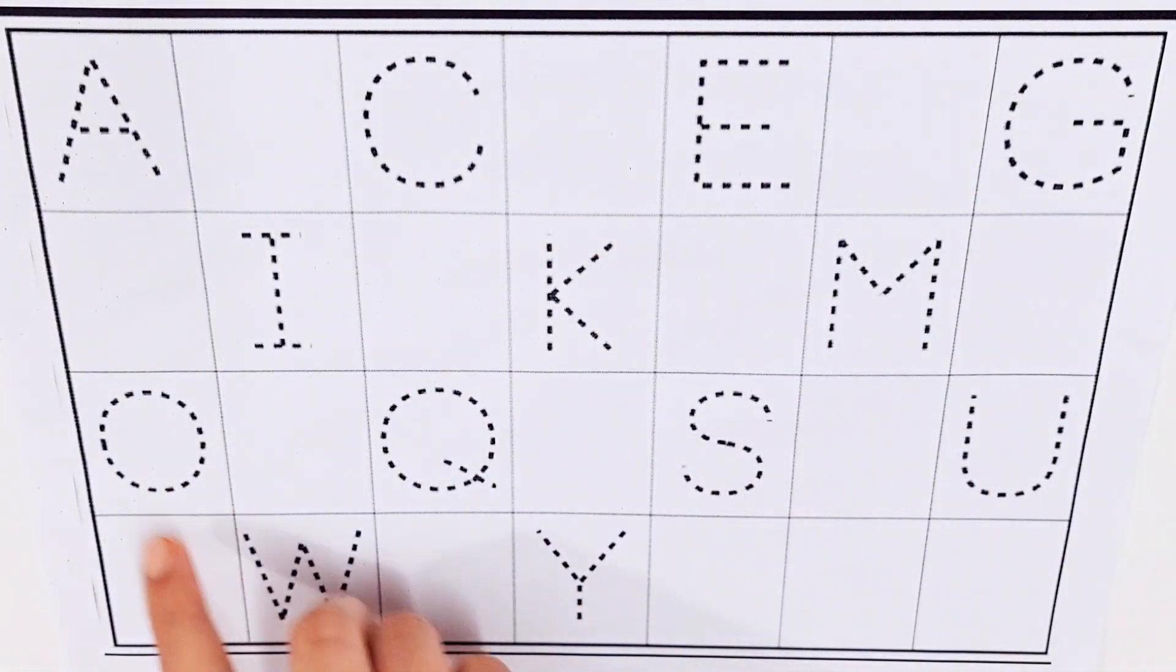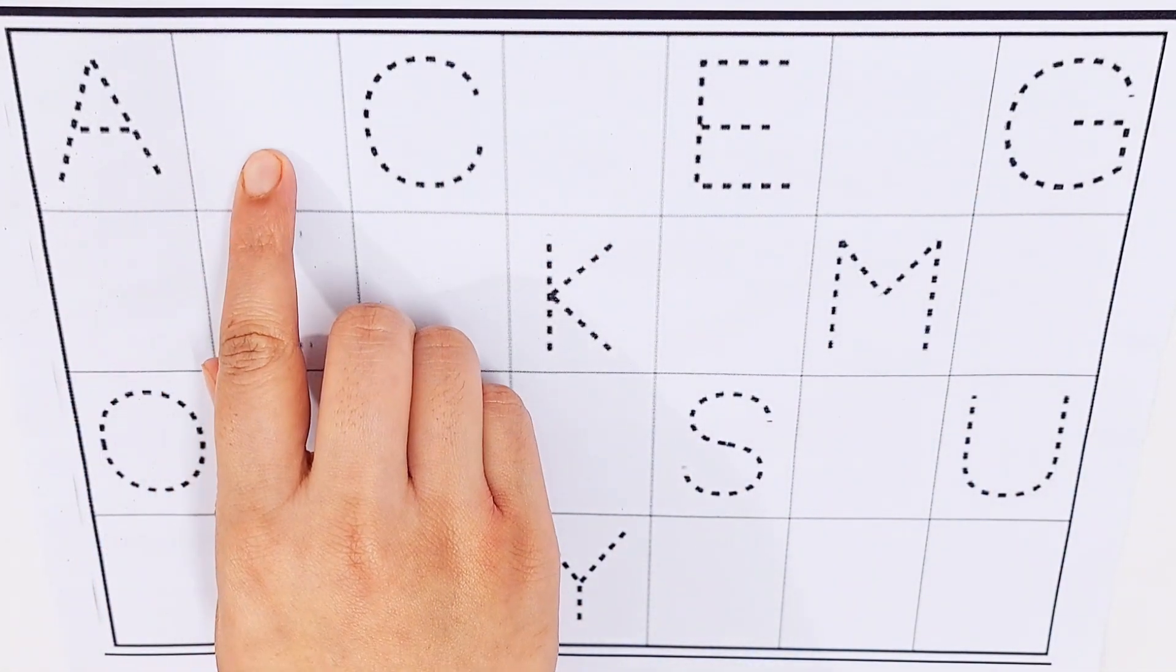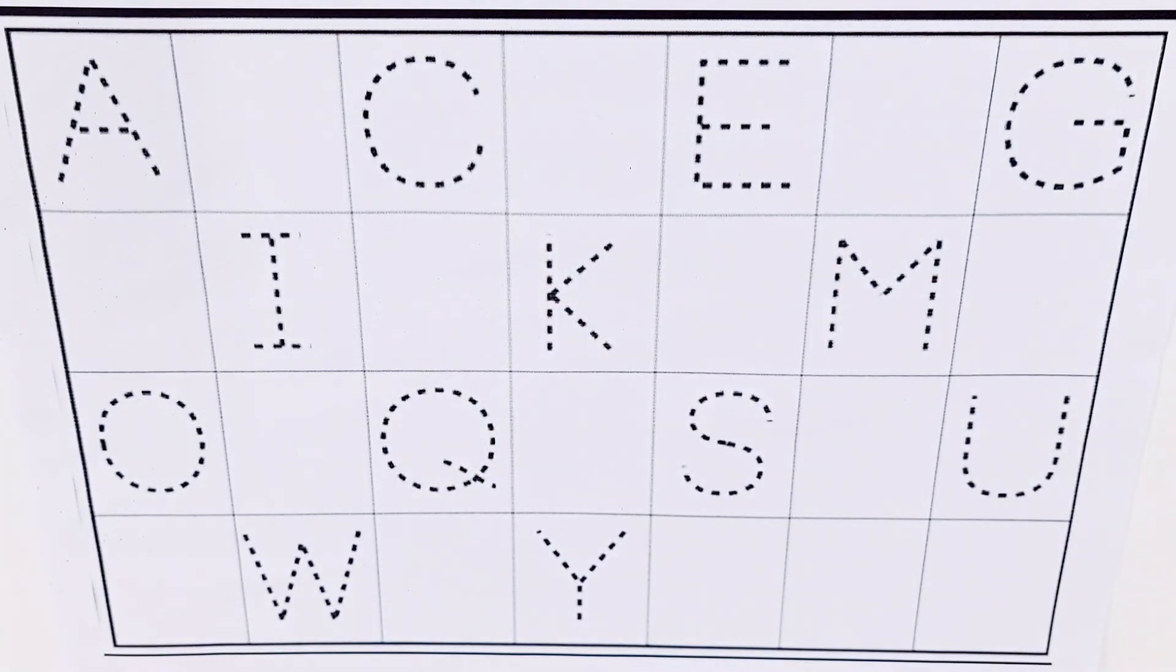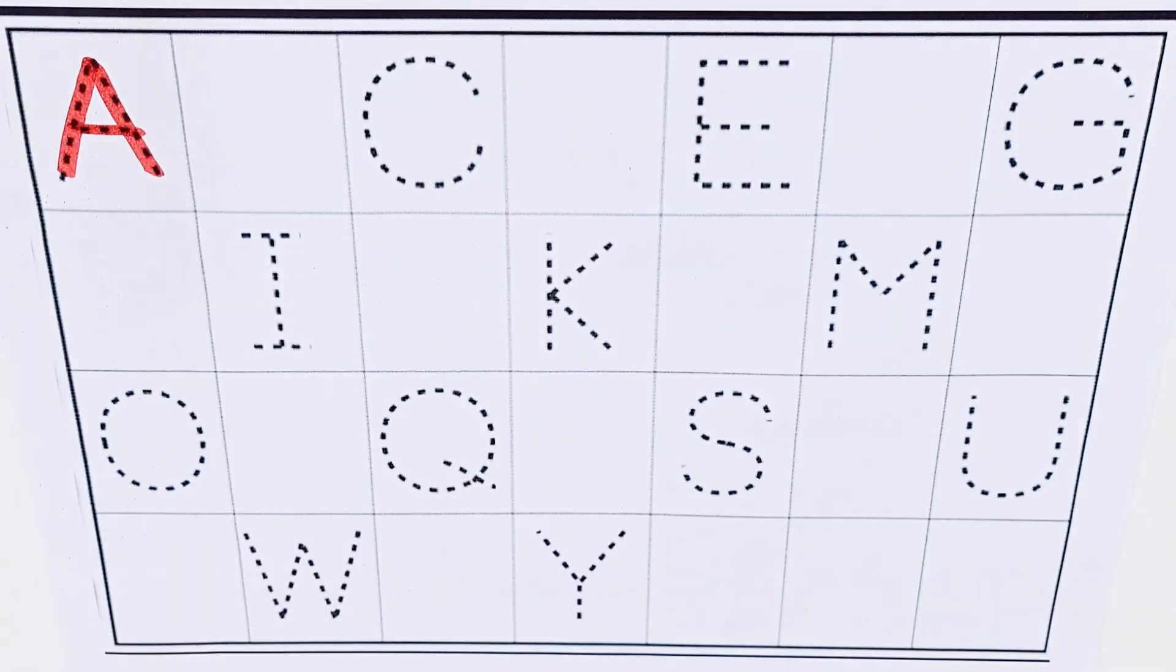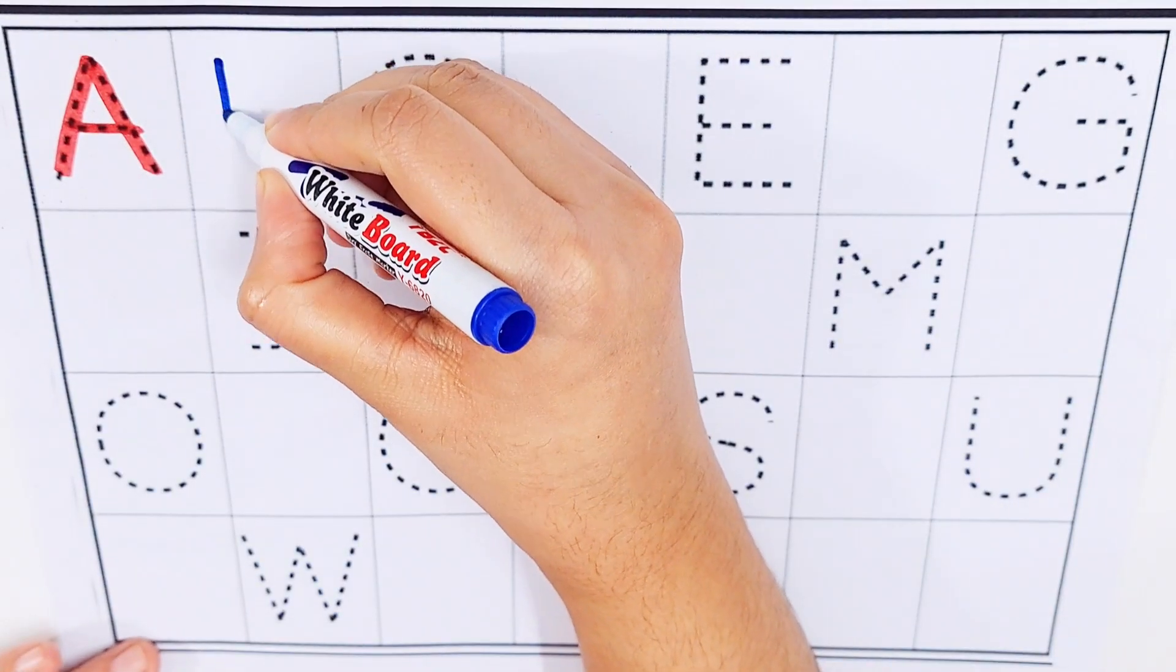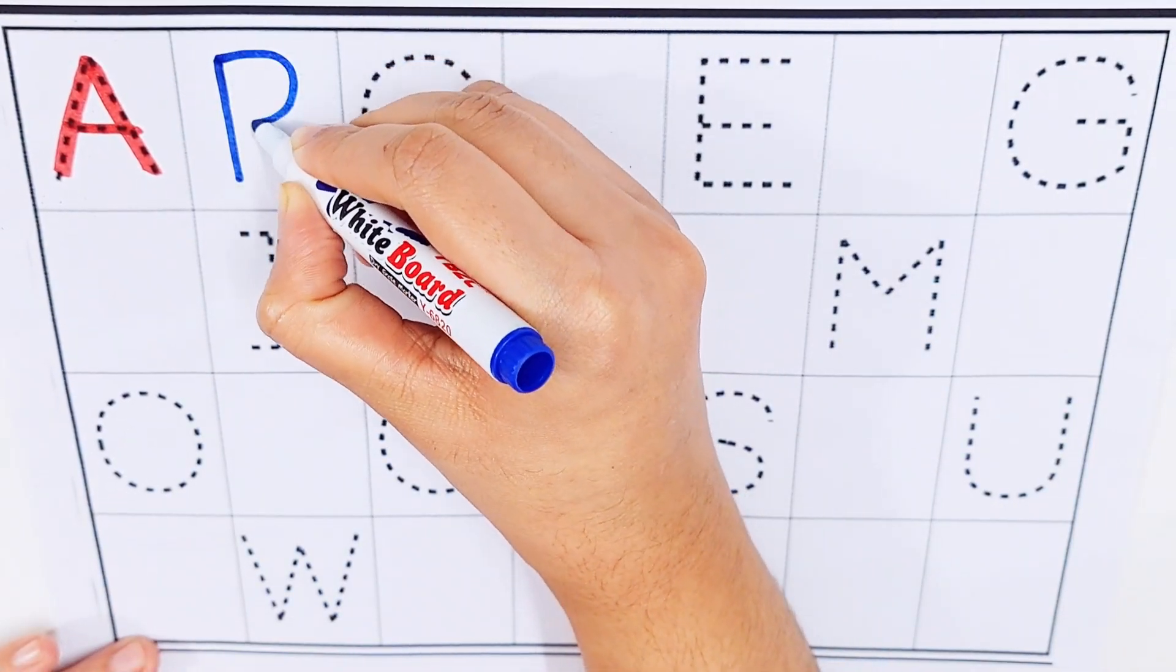Let's try to learn some alphabets. A, B, C, D. A, A for avocado. B, B for bus.